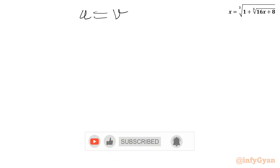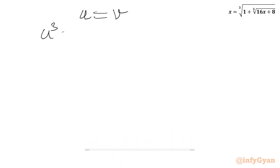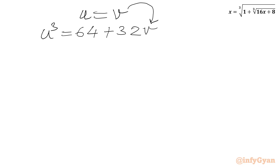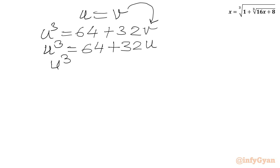So I will write our equation: u cubed equal to 64 plus 32 times v. Now here we apply v equal to u. So I can write u cubed equal to 64 plus 32u. Taking all terms to one side: u cubed minus 32u minus 64 equal to 0. Now this is one cubic equation.